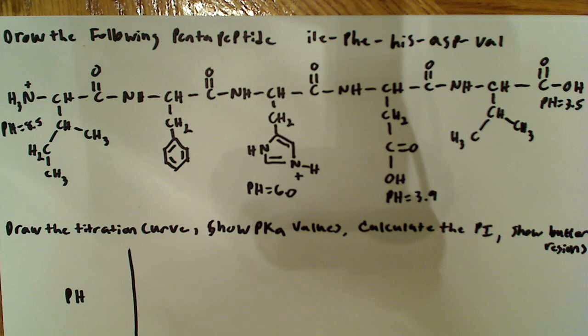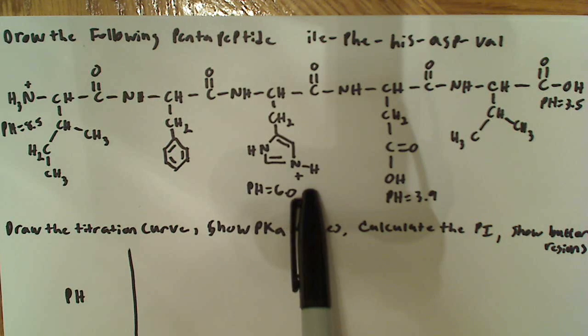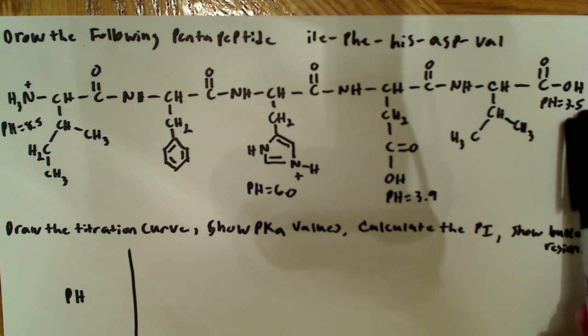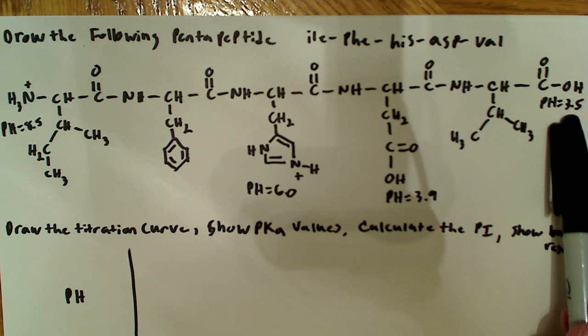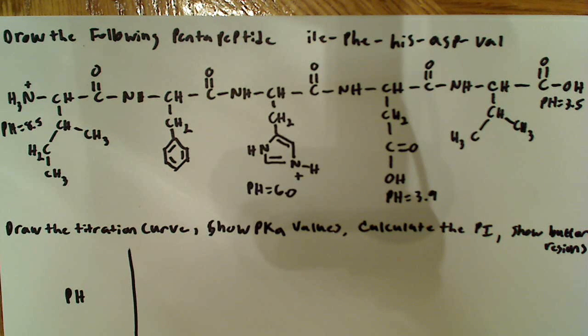And I've drawn it in a specific way. I've drawn it fully protonated, so all the protons are on each of the groups that could potentially lose one. This amine group over here, the histidine has its proton in a positive charge, aspartic acid has its proton on the OH here. The carboxyl group on the end has its OH, and what I also did was I said at which pH each one of those would lose a proton.